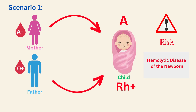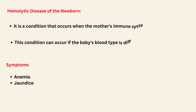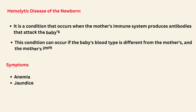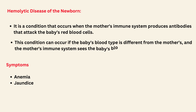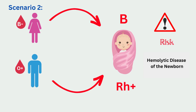Let's see what hemolytic disease of the newborn is. It is a condition that occurs when the mother's immune system produces antibodies that attack the baby's red blood cells. This condition can occur if the baby's blood type is different from the mother's, and the mother's immune system sees the baby's blood cells as foreign and develops antibodies against them. The symptoms for this disease are anemia and jaundice.